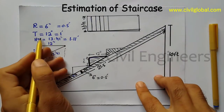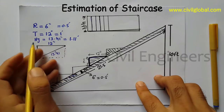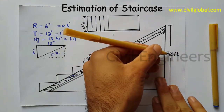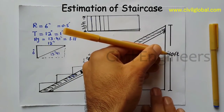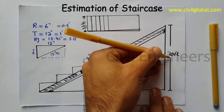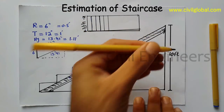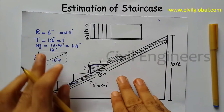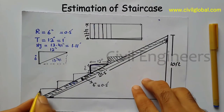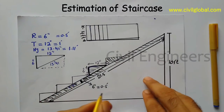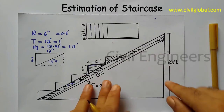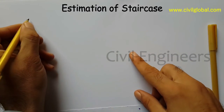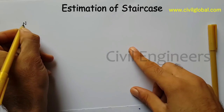So riser is 6 inches, tread is 12 inches, breadth of the staircase is 4 feet, and the total height of the staircase is 10 feet. First of all I have to find out the number of risers — how many risers are required to design this staircase to a height of 10 feet.